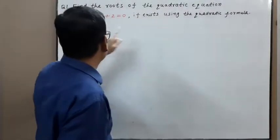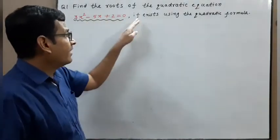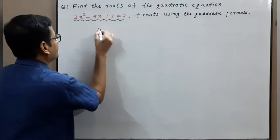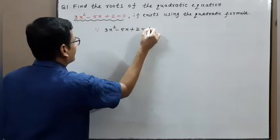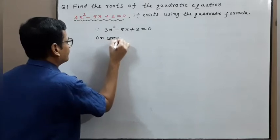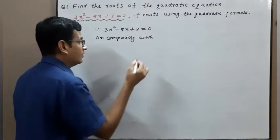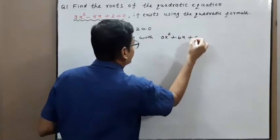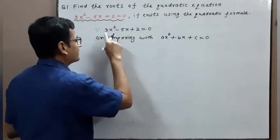Let's do some practice questions. Question number 1: find the roots of the quadratic equation 3x squared minus 5x plus 2 equal to 0, if they exist, using the quadratic formula. Since 3x squared minus 5x plus 2 equal to 0 is a quadratic equation, on comparing with ax squared plus bx plus c equal to 0, the coefficient of x squared gives us a equal to 3.